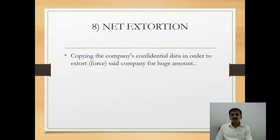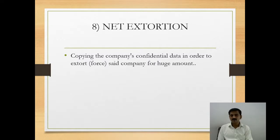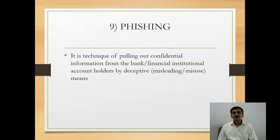The next cybercrime is net extortion — copying a company's confidential data in order to extort that company for a huge amount of money. Trying to access the confidential information of a particular company is called net extortion, and by doing so a criminal can try to disturb or stop the operations of that company.